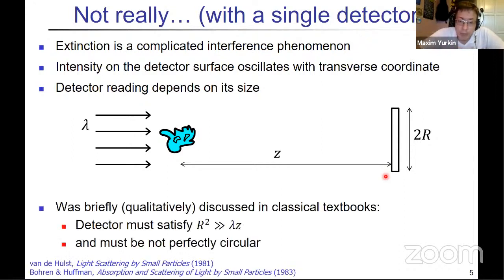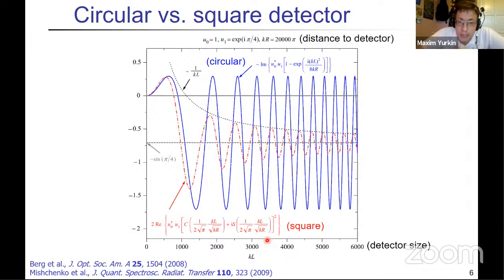This has been acknowledged in classical textbooks, both Van de Hulst and Born and Wolf. It was known that the detector should be fairly large—this squared radius should be much larger than wavelength times the distance—and it also must be not perfectly circular. However, discussion in these textbooks is largely qualitative. One of the first quantitative analyses of this phenomenon was performed by Matthew Berg for circular detectors, and then Michael Mishchenko contributed to the analysis. He proposed a square detector, and here you see the results that we will further analyze in more detail.